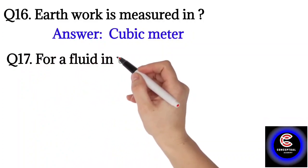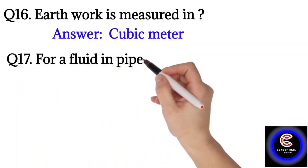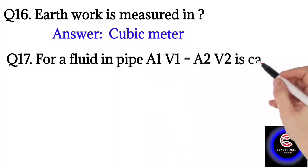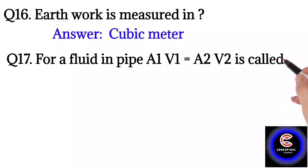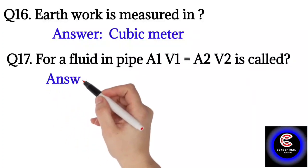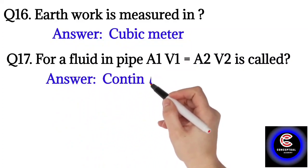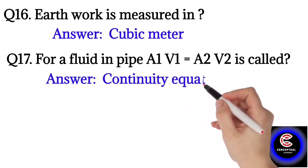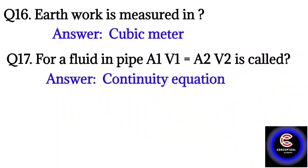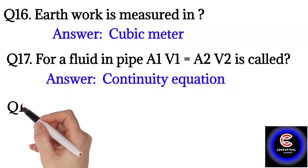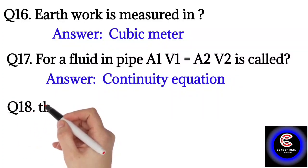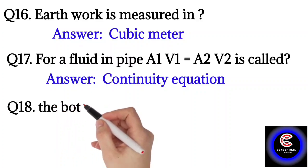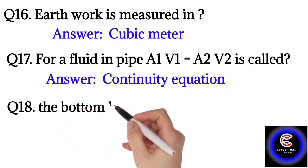Question number seventeen: for a fluid, A1V1 equals A2V2. This is called the continuity equation.